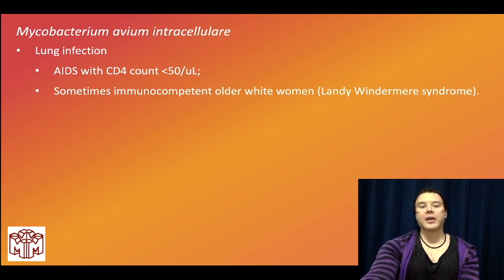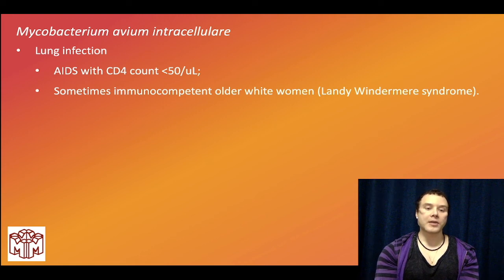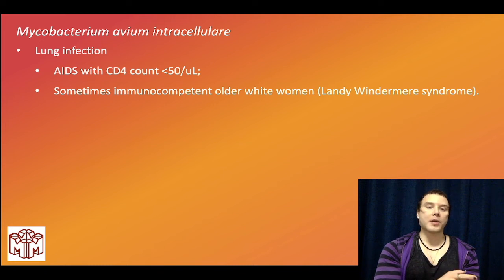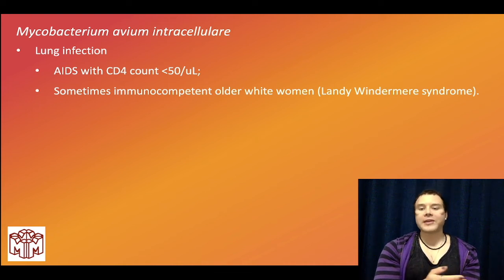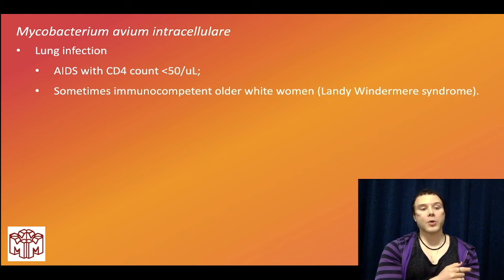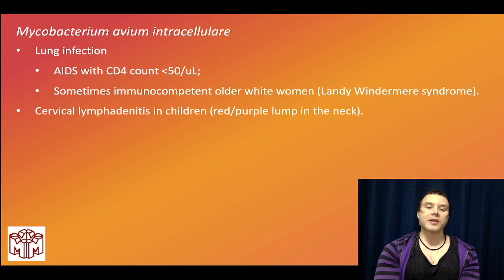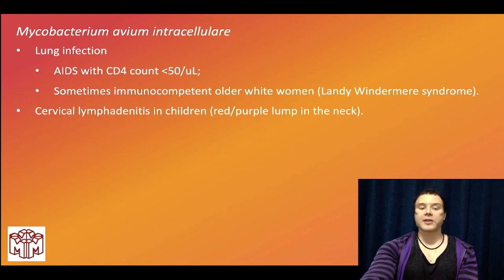Mycobacterium avium-intracellulare (MAI) is classically seen in HIV/AIDS patients with CD4 under 50. We used to give azithromycin prophylaxis, but no longer per new guidelines. MAI infections can also cause pulmonary disease — a pulmonary infection in older white women — referred to as Lady Windermere syndrome. I've seen that on USMLE. It can also cause a violaceous nodule cervical lymphadenitis on the neck in a child, which is being assessed on USMLE.